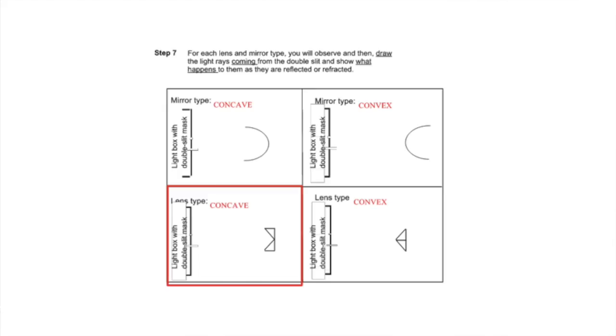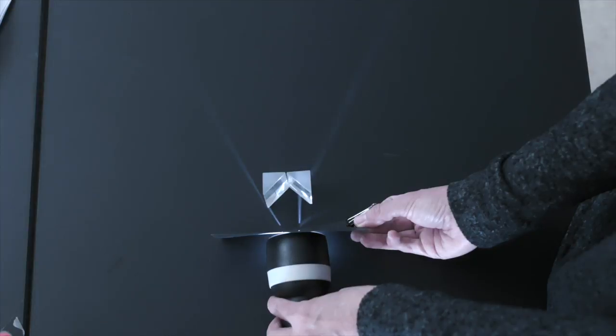And now the third diagram. Here are the light rays for the concave lens.